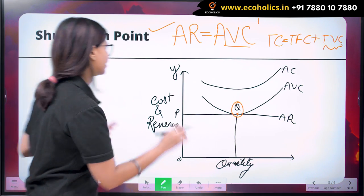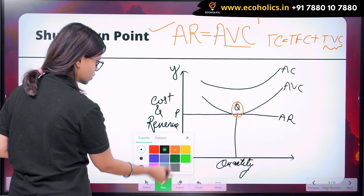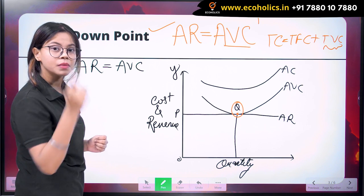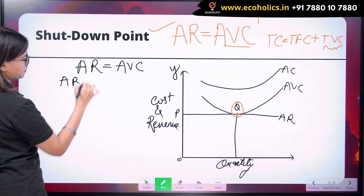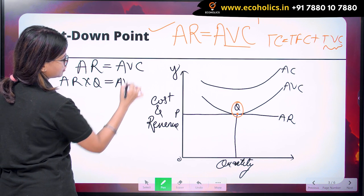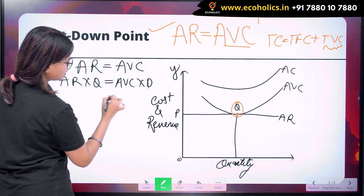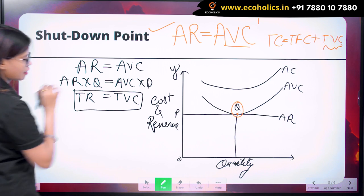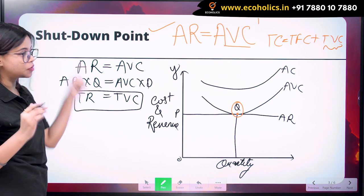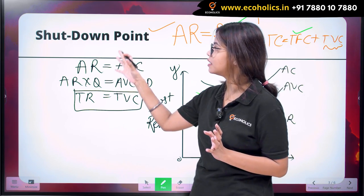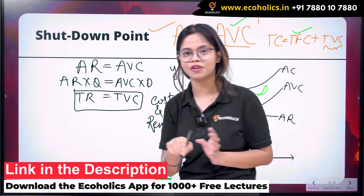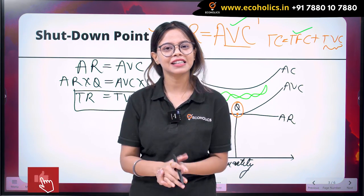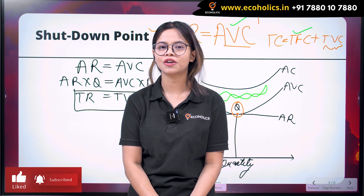We can write this as: AR equals AVC, and when we multiply both sides by Q, we get TR equals total variable cost. This is the point where the firms are incurring losses. I hope the shutdown point and break-even point are clear. I'll see you next time with another important and confusing concept. Please like, share, comment, and subscribe to our channel. Thank you.